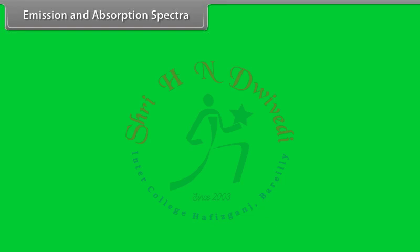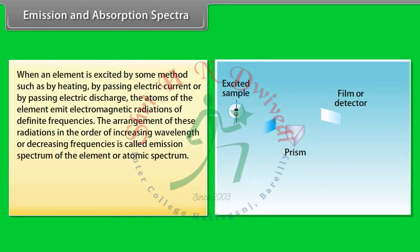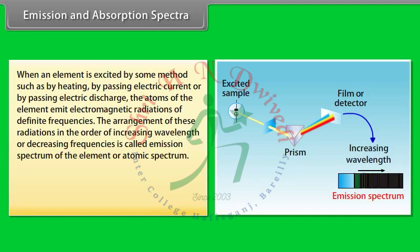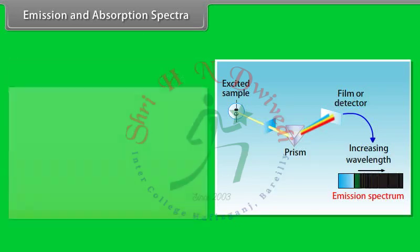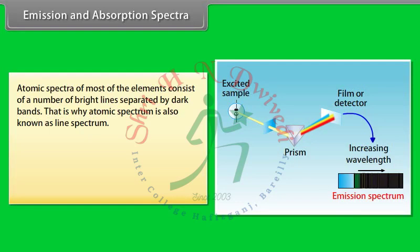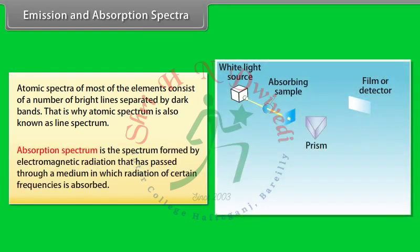Emission and absorption spectra: When an element is excited by heating, passing electric current, or electric discharge, the atoms emit electromagnetic radiations of definite frequencies. The arrangement of these radiations in order of increasing wavelength or decreasing frequency is called the emission spectrum or atomic spectrum of the element. Atomic spectrum can be used to identify the element and is sometimes called the fingerprint of its atoms. Atomic spectra of most elements consist of bright lines separated by dark bands — that is why atomic spectrum is also known as line spectrum.